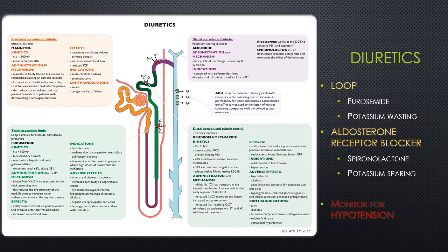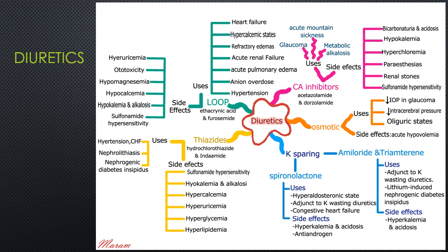It's important to remember that the kidneys are filtering the intravascular space, and fluid is lost initially from the intravascular space, causing a relative hypotension. Eventually the fluid will shift from the interstitial and intracellular spaces to replenish the intravascular space. But hypotension, especially orthostatic hypotension, is a common side effect of diuretics. Watch for orthostatic hypotension as well as electrolyte imbalances depending on the type of diuretic.